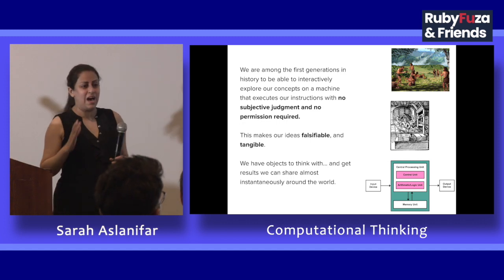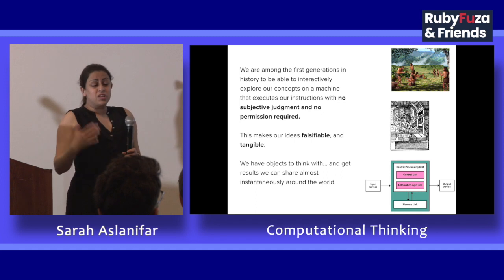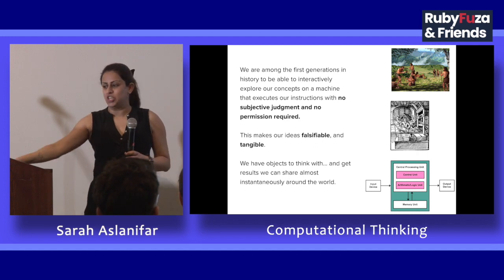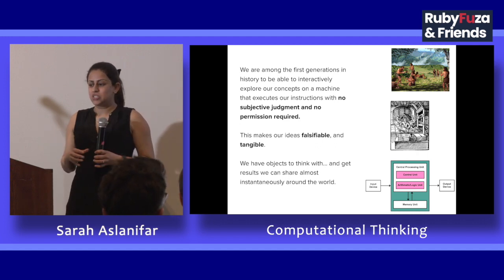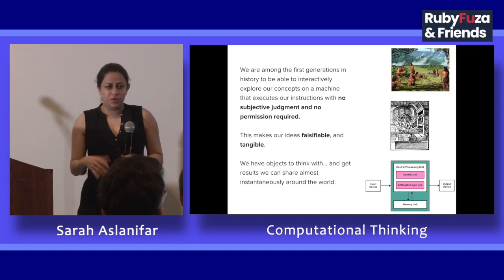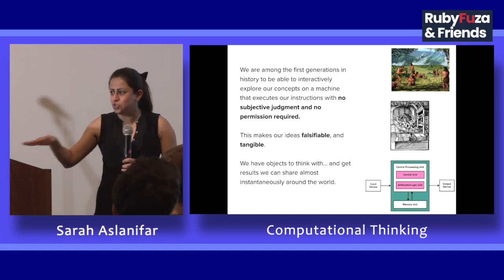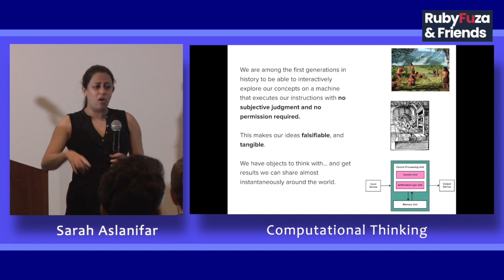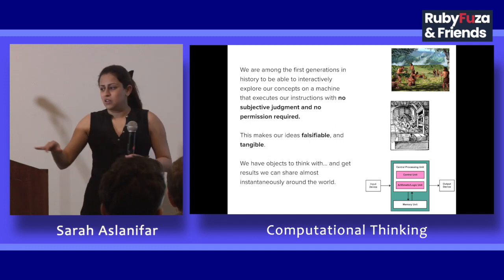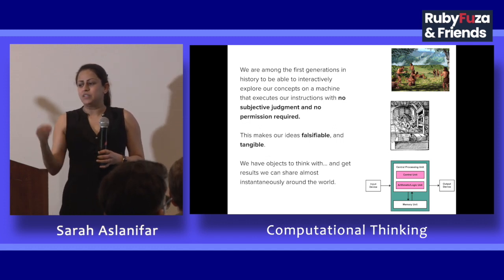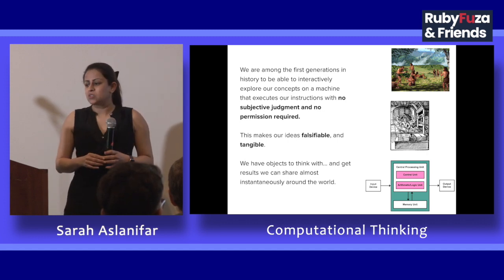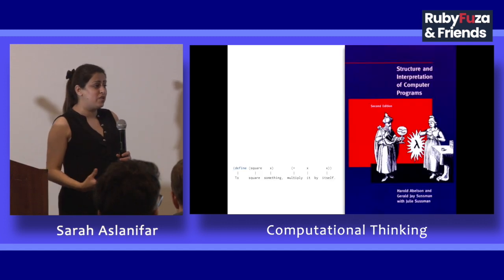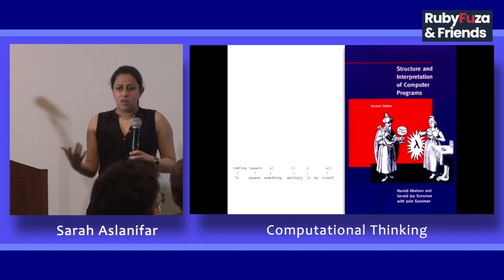We are amongst the first generations in history who are able to iteratively explore our concepts on a machine that executes instructions with no subjective judgment or permission required. The computer doesn't judge you based on gender, sex, or race — nothing. This makes our ideas falsifiable and tangible. We also now have an object to think with and to prove our ideas with, and share it around the world almost instantly.